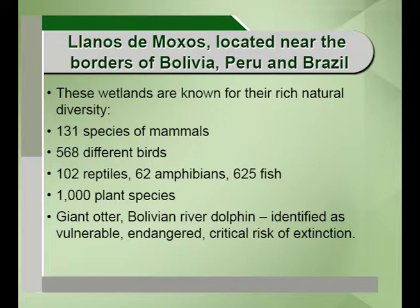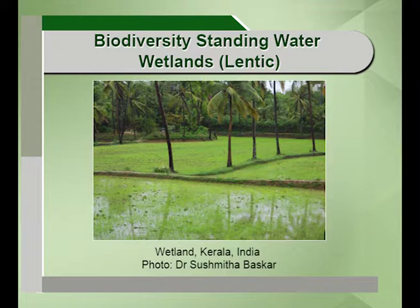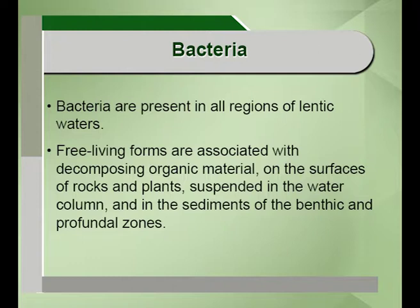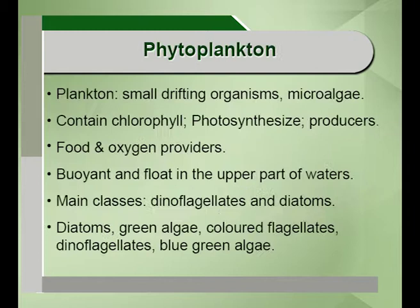Moving to the biodiversity of standing water wetlands, the first and most primitive organisms are bacteria, which are free-living unicellular forms found in the benthic and profundal zones, suspended in the water column and sediments. Phytoplankton, where phyto means plant and plankton means small drifting organisms, are also called microalgae. They contain chlorophyll and are the food and oxygen providers, helping in photosynthesis. They are buoyant and float on the water surface, with main classes including dinoflagellates and diatoms, such as blue-green algae and coloured flagellates.